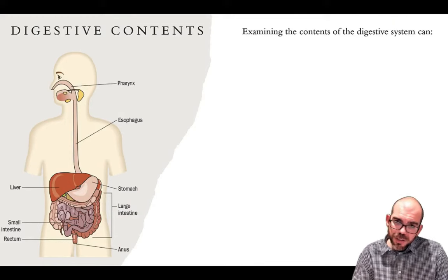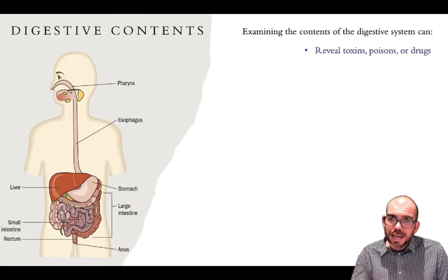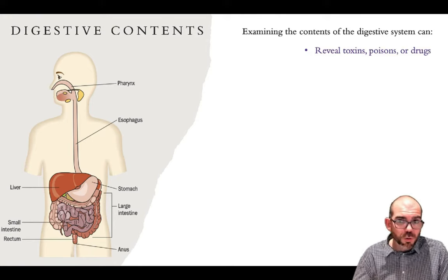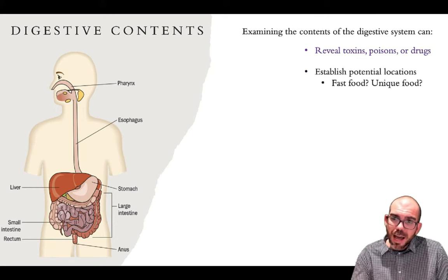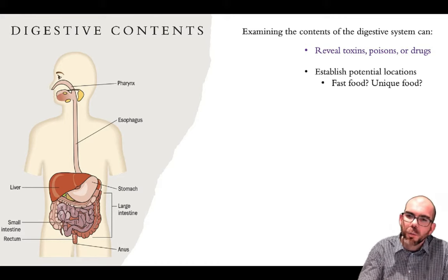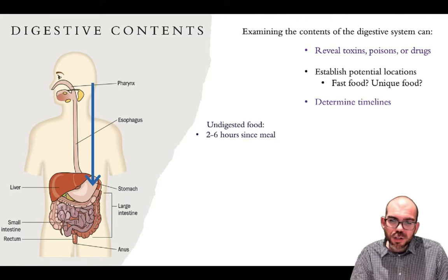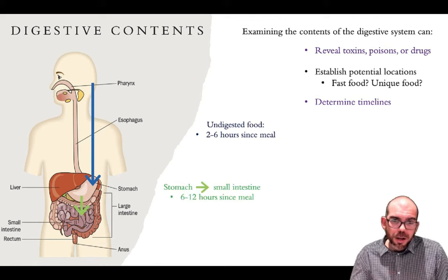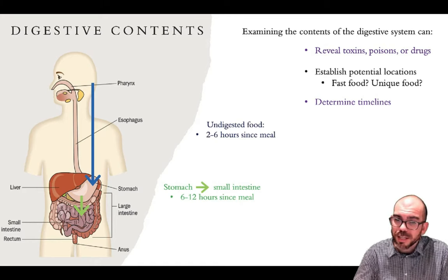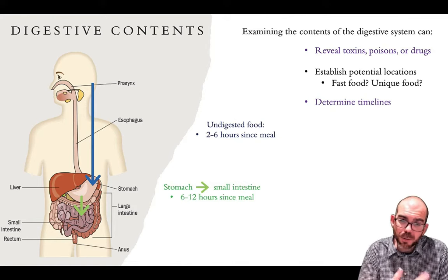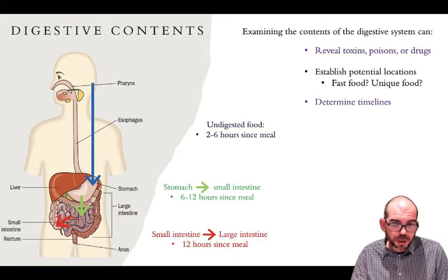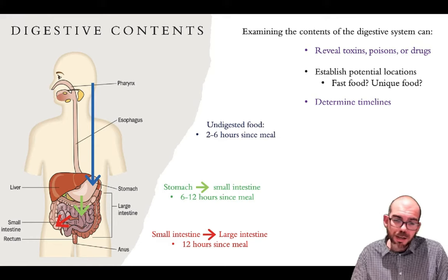We can also use the digestive system to establish a timeline. Examining digestive contents can reveal toxins, poisons, or drugs. Undigested food in the stomach means it has been two to six hours since the last meal. Food found in the small intestine means six to twelve hours have passed since that food was eaten. Food found in the large intestine means at least 12 hours have passed since that meal.